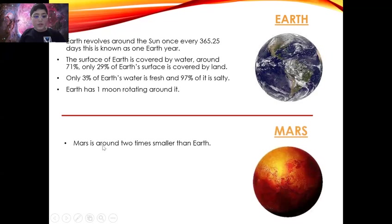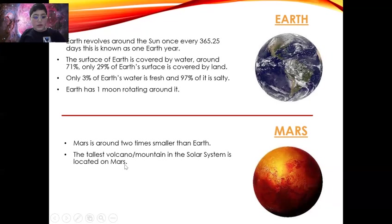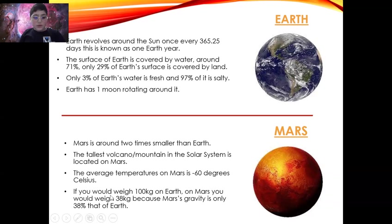Mars. Mars is around two times smaller than Earth. The tallest volcano, a mountain in the solar system, is located on Mars. The average temperature on Mars is minus 60 degrees Celsius. If you would weigh 100 kilograms on Earth, on Mars you would weigh 38 kilograms because Mars's gravity is only 38% that of Earth.